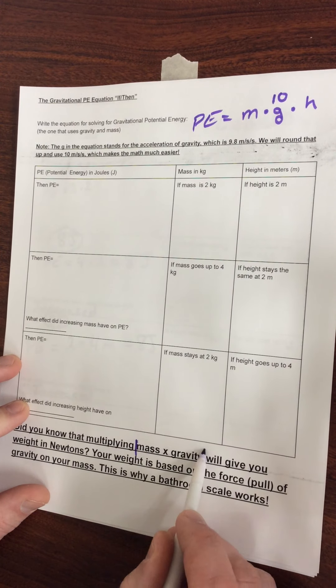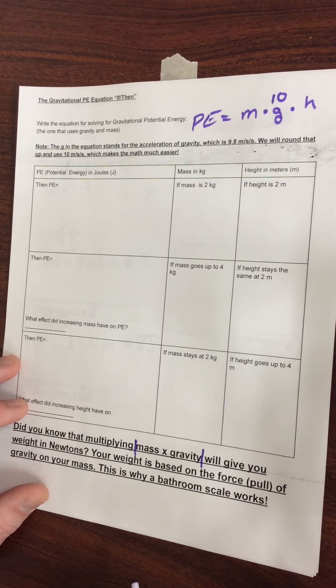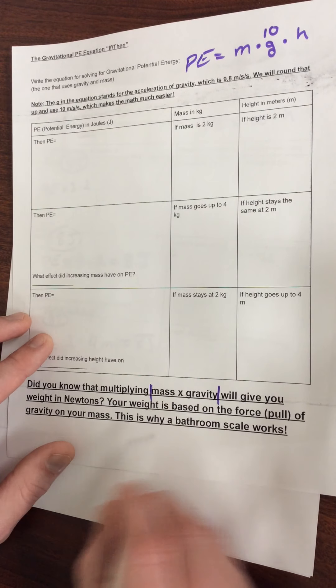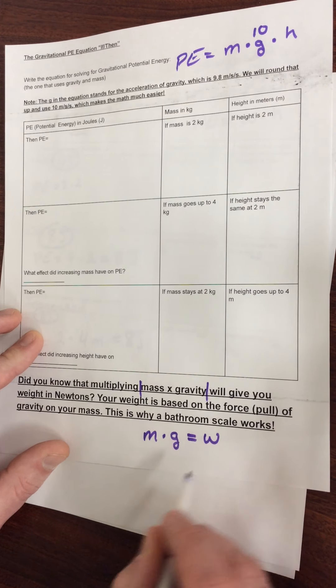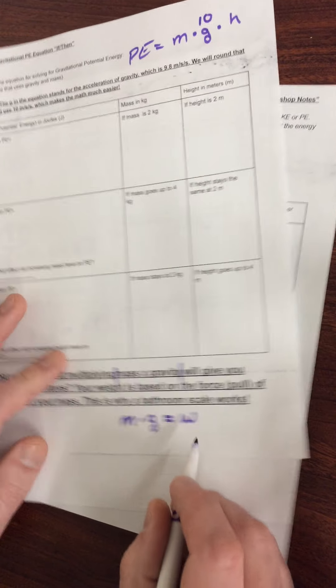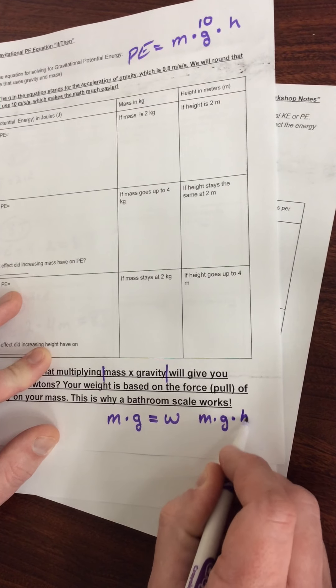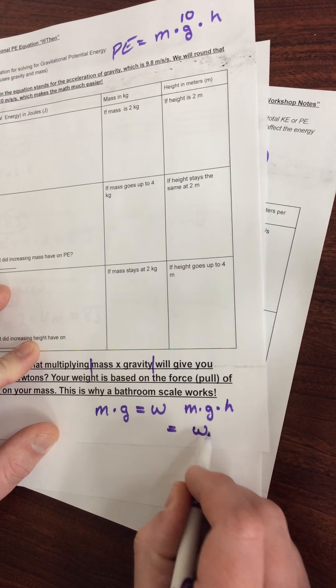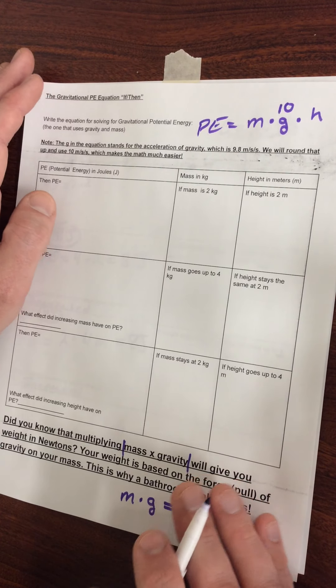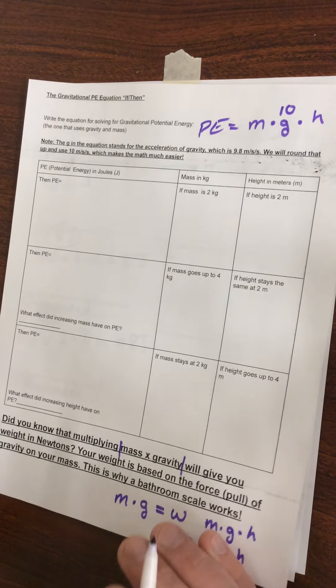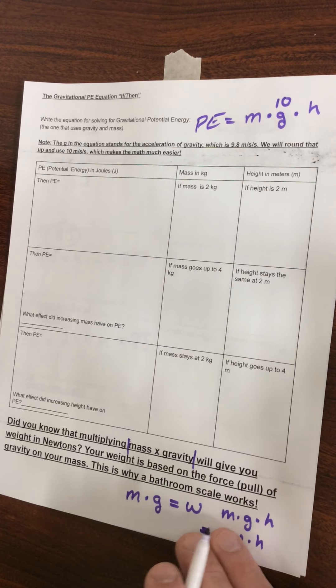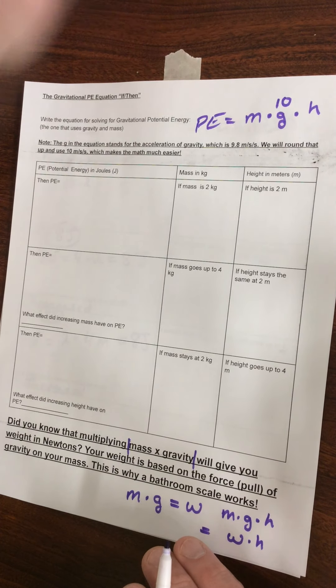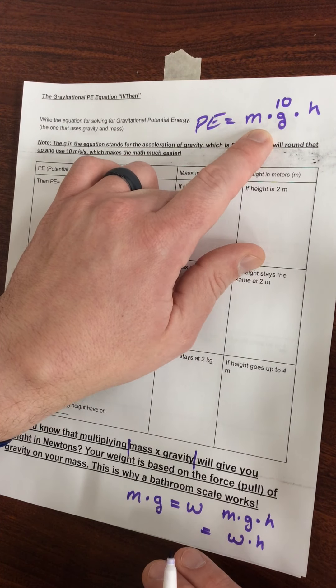Another thing I want to draw your attention to is how similar these two equations are. By multiplying mass times gravity, it'll give you weight in newtons. Mass times gravity equals weight. So mass times gravity times height is actually equal to weight times height. The reason that we're using both is because sometimes you're not given weight. You're given mass and gravity, and it's easy enough just to plug it in.